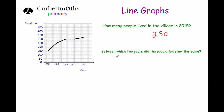The next question says: between which two years did the population stay the same? In a line graph, if you're looking for something staying the same, you're looking for a horizontal line — a line going straight across. As you can see, in 2016 and 2017 the line joining them is flat, it's horizontal. The population is 300 in 2016 and 300 in 2017. So between which two years did the population stay the same? That would be 2016 and 2017.